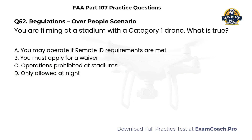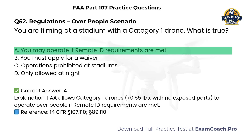Regulations — Over-People Scenario. You are filming at a stadium with a Category 1 drone. What is true? A. You may operate if remote ID requirements are met. B. You must apply for a waiver. C. Operations are prohibited at stadiums. D. Only allowed at night. Correct answer: A. You may operate if remote ID requirements are met. The FAA allows Category 1 drones — less than 0.55 pounds with no exposed parts — to operate over people if remote ID requirements are met.